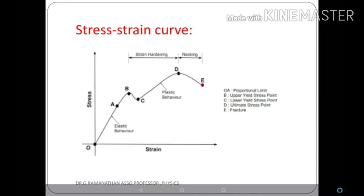From the slope of the linear region we can find the stiffness constant, which is nothing but the modulus. This linear region obeys Hooke's law: within the elastic limit, stress is directly proportional to strain. As stress increases further, strain increases to reach point B, which is called the upper yield point. Then the curve goes to point C, which is called the lower yield point.